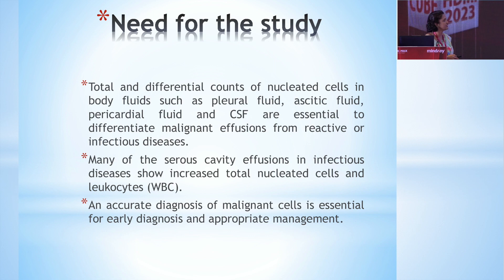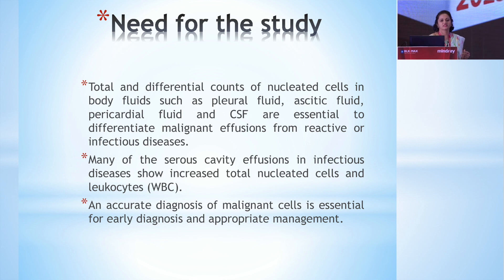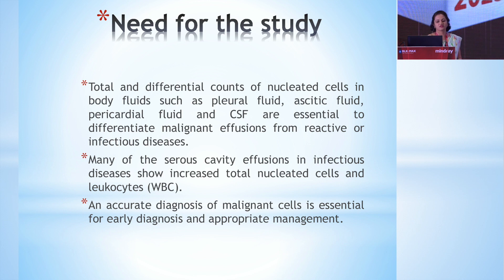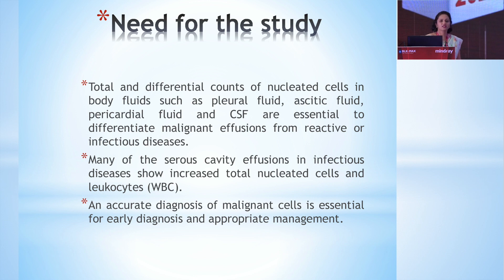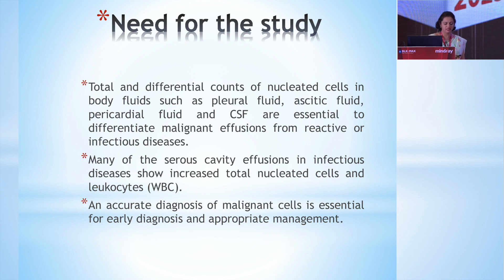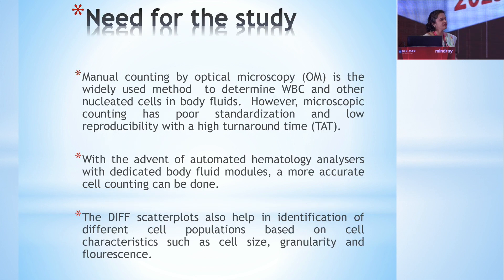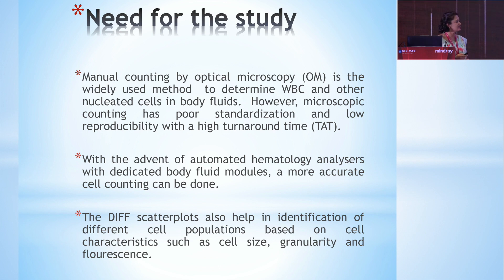What was the need for the study? The total and differential counts of nucleated cells in body fluids such as pleural fluid, ascitic fluid, pericardial fluid, and CSF are essential to differentiate malignant effusions from reactive or infectious diseases. Many serious cavity effusions in infectious diseases show increased total nucleated cells. An accurate diagnosis of malignant cells is essential for early diagnosis and appropriate management. Manual counting by optical microscopy has been the widely used method for total WBC counting as well as detection of malignant cells.